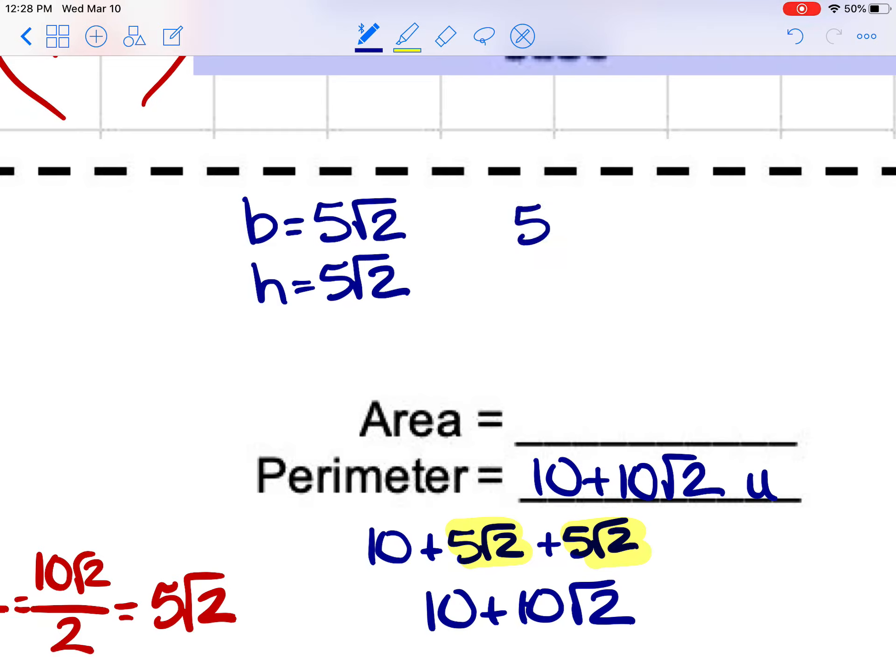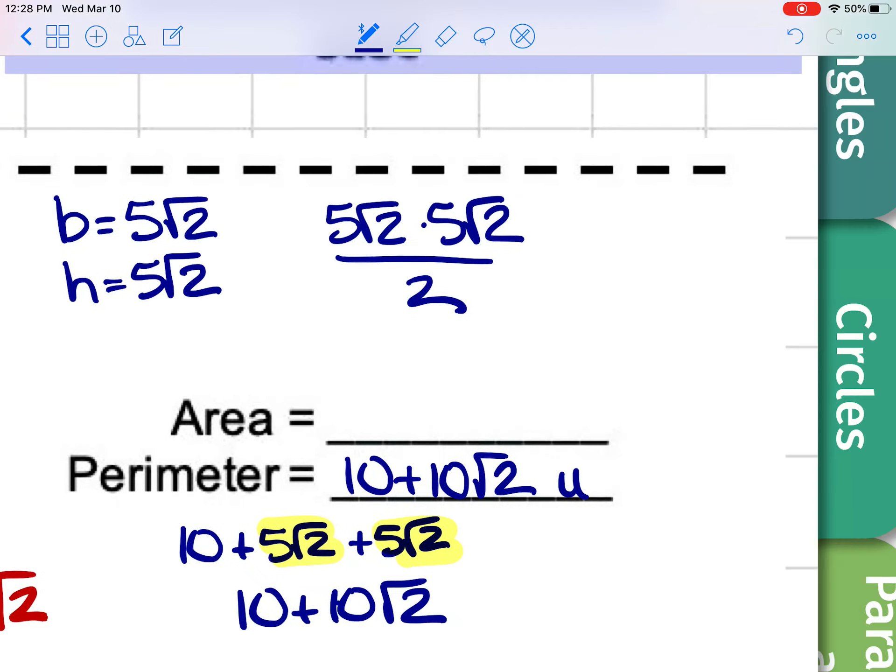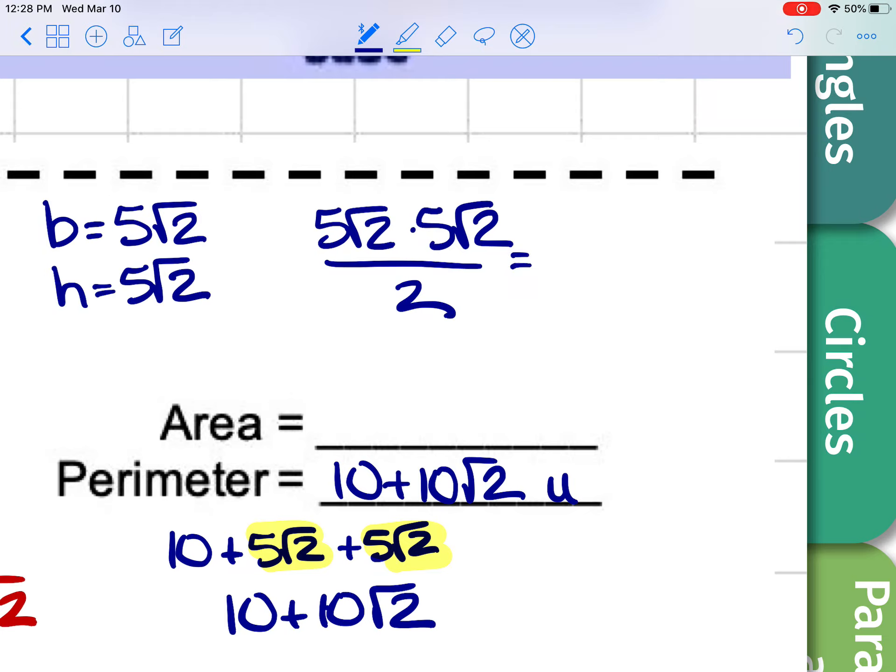So let's set up that formula. 5 square root of 2 times 5 square root of 2 base times height divided by 2. Or you can multiply it by half, whatever works best for you. So let's combine our like terms. Outside times outside gives us 25. Inside times inside gives us square root of 4 over 2. Well, I know the square root of 4 is 2, and those 2 would cancel, which means our area is just going to be 25 units squared.